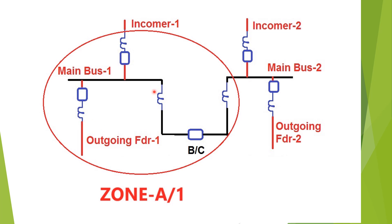These are the CT arrangements for the incomer, outgoing feeder, and bus coupler. In the bus coupler breaker there are two CTs — one on the main bus one side and one on the main bus two side.